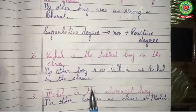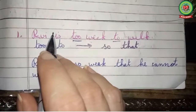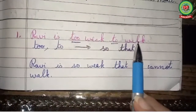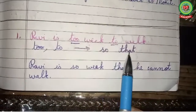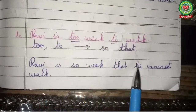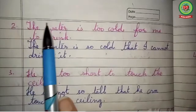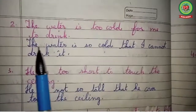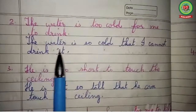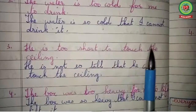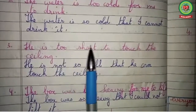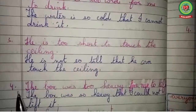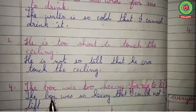The next rule: convert 'too...to' into 'so...that.' Number one: 'Ravi is too weak to walk' becomes 'Ravi is so weak that he cannot walk.' Number two: 'The water is too cold for me to drink' becomes 'The water is so cold that I cannot drink it.' Number three: 'He is too short to touch the ceiling' becomes 'He is not so tall that he can touch the ceiling.' Number four: 'The box was too heavy for me to lift' becomes 'The box was so heavy that I could not lift it.'